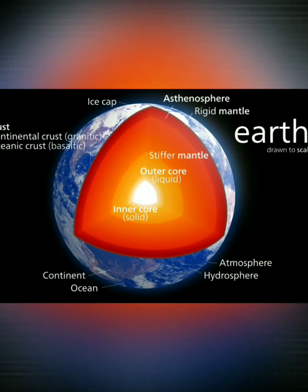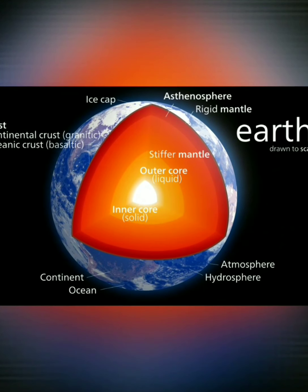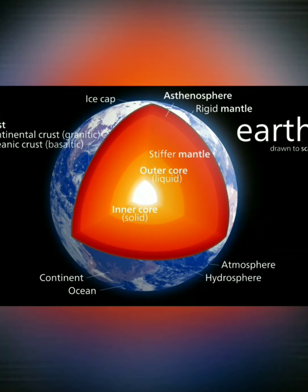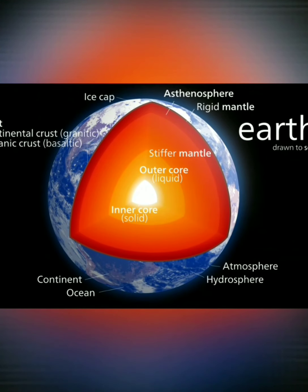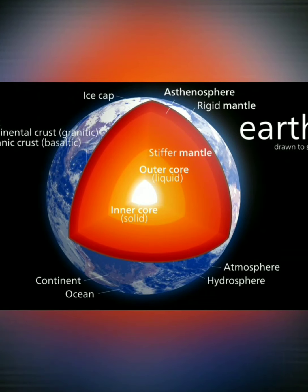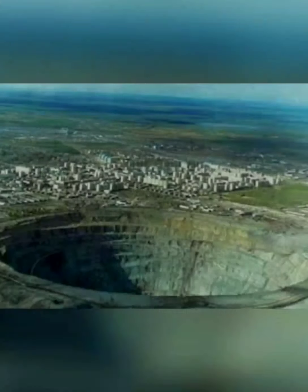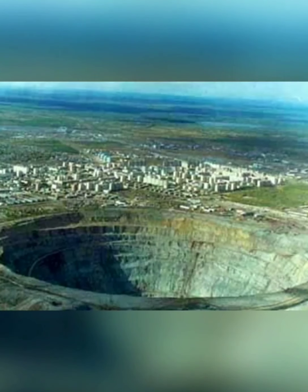In this picture of the interior of the earth, you can see three parts. The upper part is the crust, the middle part is the mantle, and the inside of the earth is the core. Before explaining these parts, I want to show you another picture.